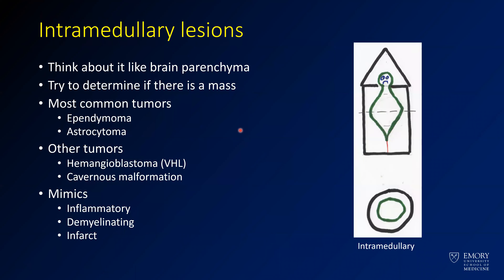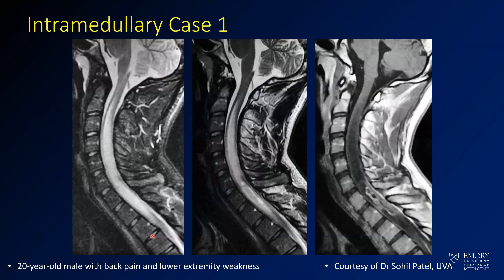First we'll talk about intramedullary lesions. When thinking about the intramedullary spinal canal, think about the brain parenchyma. Primary tumors — try to figure out if there's mass effect, or if it's mass-neutral, or if there's even some volume loss. If you're looking at a tumor, the most common ones are ependymoma or astrocytoma — these are the most common spine tumors. Other more rare tumors include hemangioblastomas and cavernous malformations, which are more associated with hemosiderin and hemorrhage. You can also have inflammatory and demyelinating things that mimic tumors.